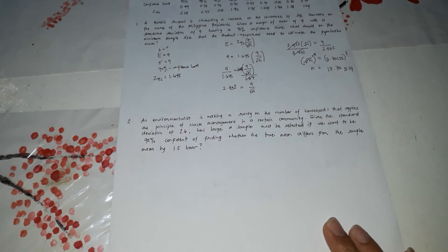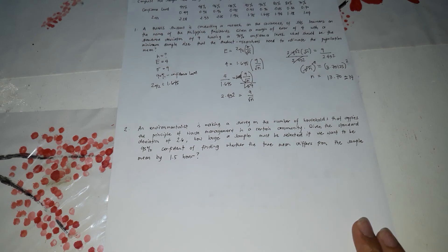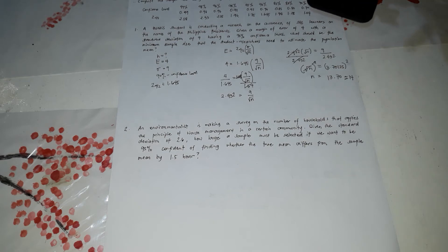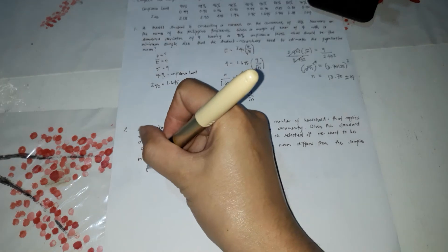For number two, problem number two, an environmentalist is making a survey on the number of households that applies the principle of waste management in a certain community. Given the standard deviation of 2.6, how large a sample must be selected if you want to be 95% confident of finding whether the true mean differs from the sample mean by 1.5?